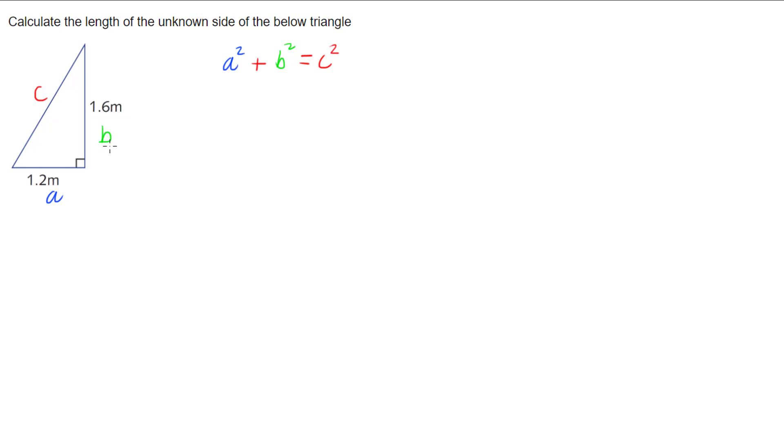So by squaring the two shorter sides and adding them together, we can obtain the square of the hypotenuse. This can help us by filling this information in and then solving for C. So let's do that.